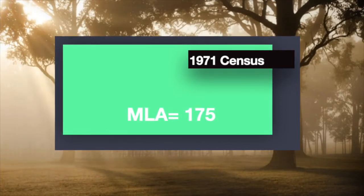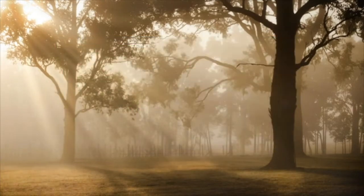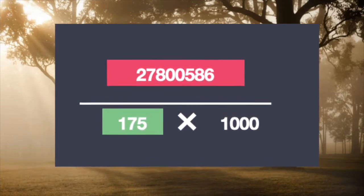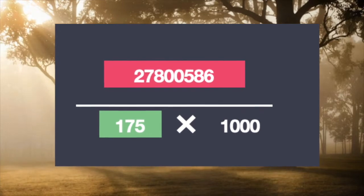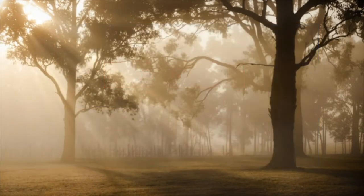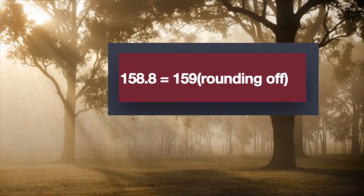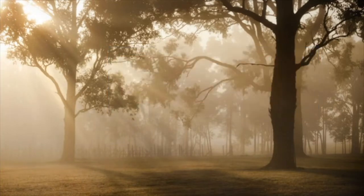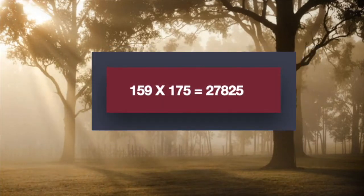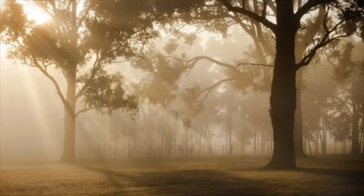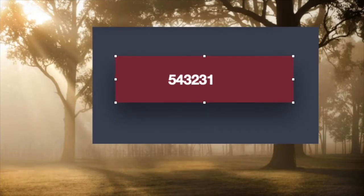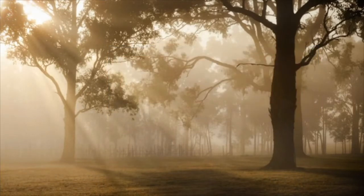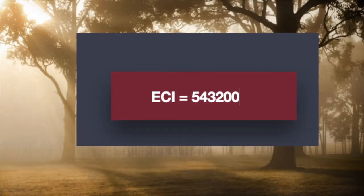For example, the population of Andhra Pradesh is 2 crore 78 lakh 586 and the number of MLAs equals 175. This strength is according to the 1971 census — remember why delimitation was stopped in 1971. To calculate the value of each MLA's vote, divide the population by the number of MLAs and multiply by 1000. So for Andhra Pradesh: 2 crore 78 lakh 586 divided by 175, multiplied by 1000, gives a value of 158.8 — rounded off to 159. That's the value of one Andhra Pradesh MLA. Multiplied by the total number of MLAs, you get the total value of Andhra Pradesh, which equals 27,825. Likewise, the total value of all states and UTs equals 5 lakh 43,231. After rounding, the value given by the Election Commission of India is 5 lakh 43,200.